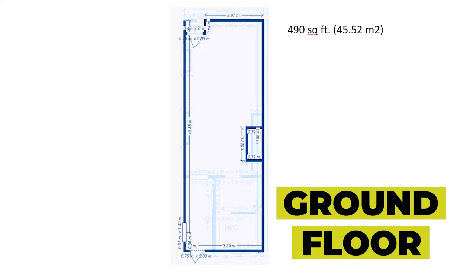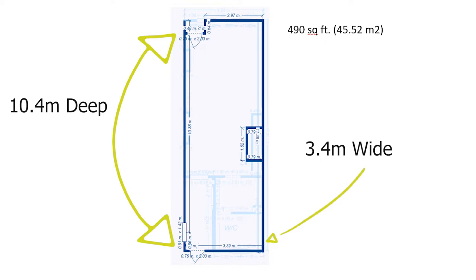The property was in flood zone three, which means you're probably going to need to get a flood risk assessment done when you're changing its use. The ground floor was just one big open area, 490 square feet - about 45 square metres, around 3.4 metres wide by 10.4 metres deep. It had a rear fire door exit at the back with a window that had been bricked up, which you could unbrick to let natural light through. At the front it was fully glazed with a door.